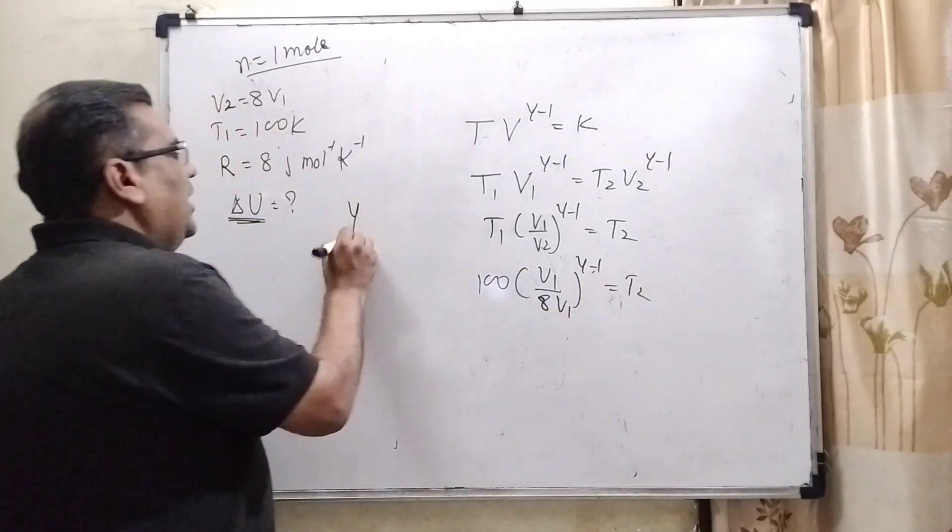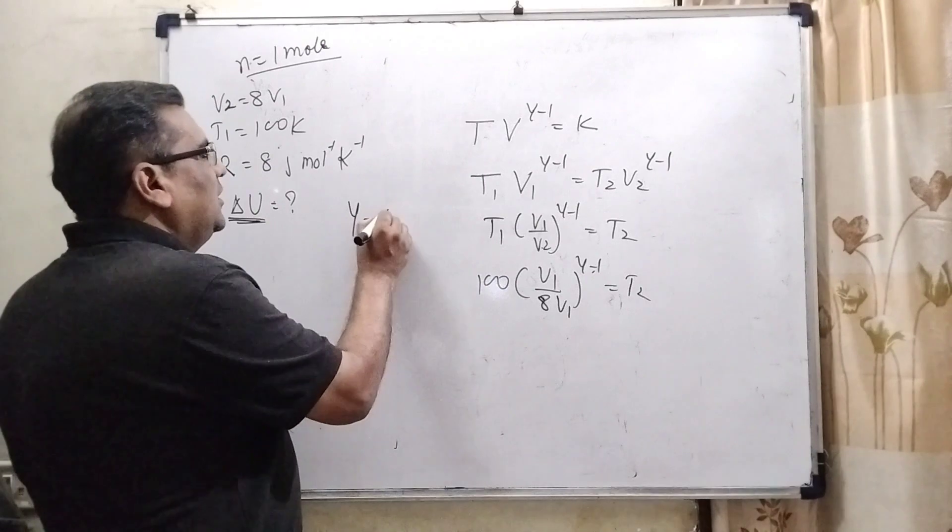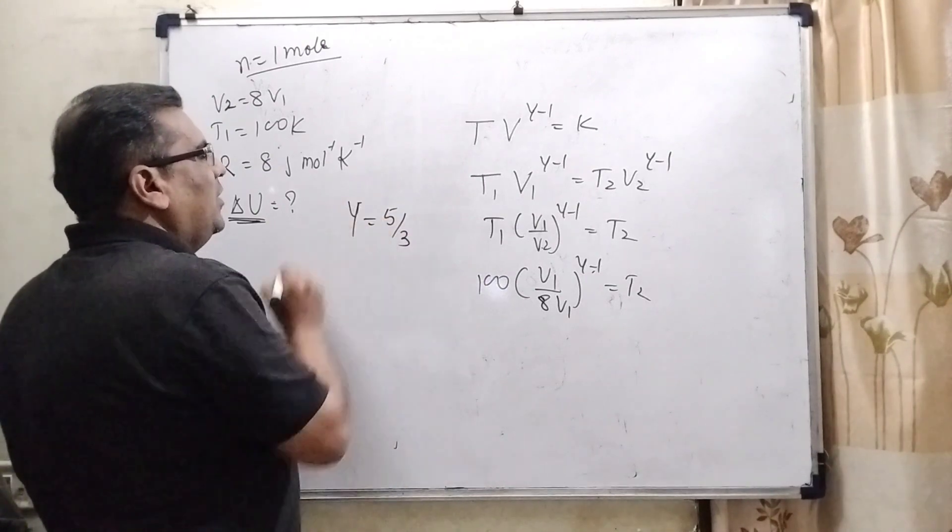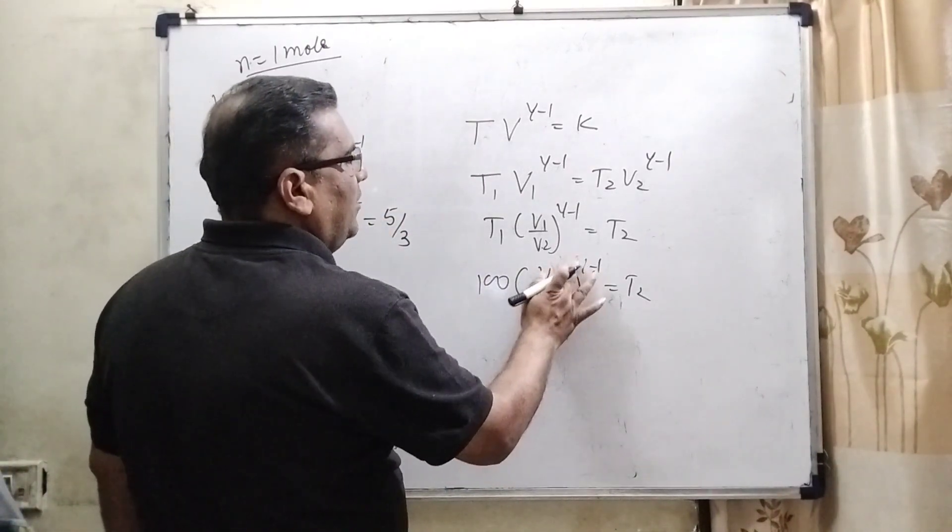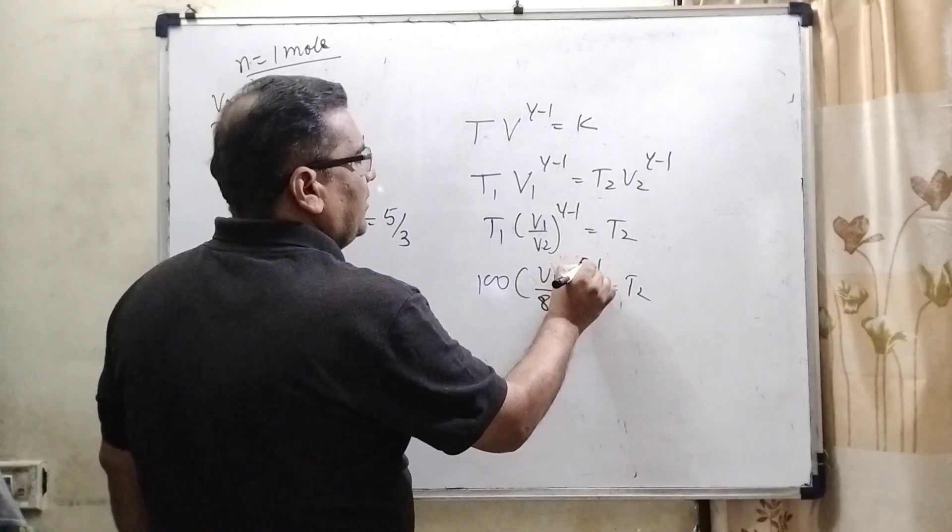Here gamma, here we have given monoatomic. Monoatomic means the value of gamma is 5 by 3. So here in the place of gamma we have substitute 5 by 3.